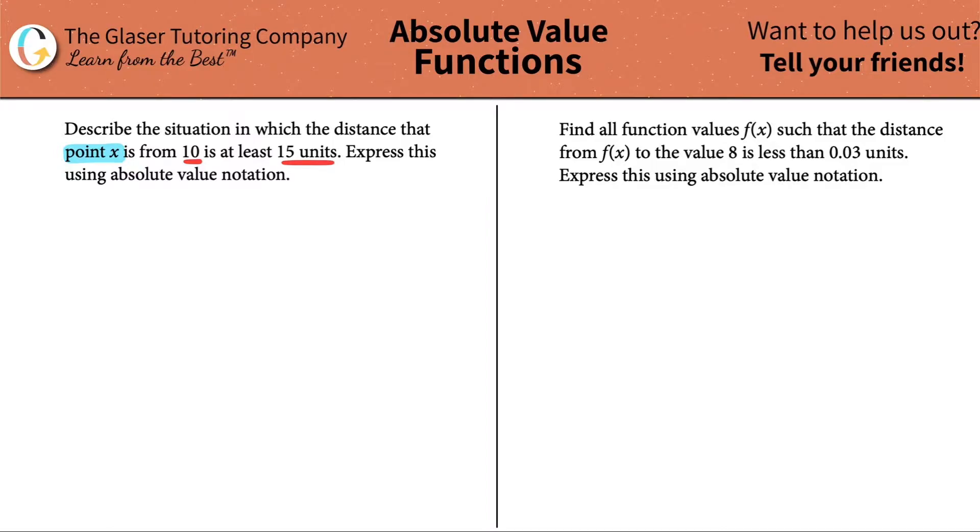Okay, so we kind of went into what absolute value notation was in the last question. If you want a full rundown, go see that question. So this one will be like a quick inversion. But just know that absolute value notation is when we see those lines, those big straight lines, and it always equals a distance.